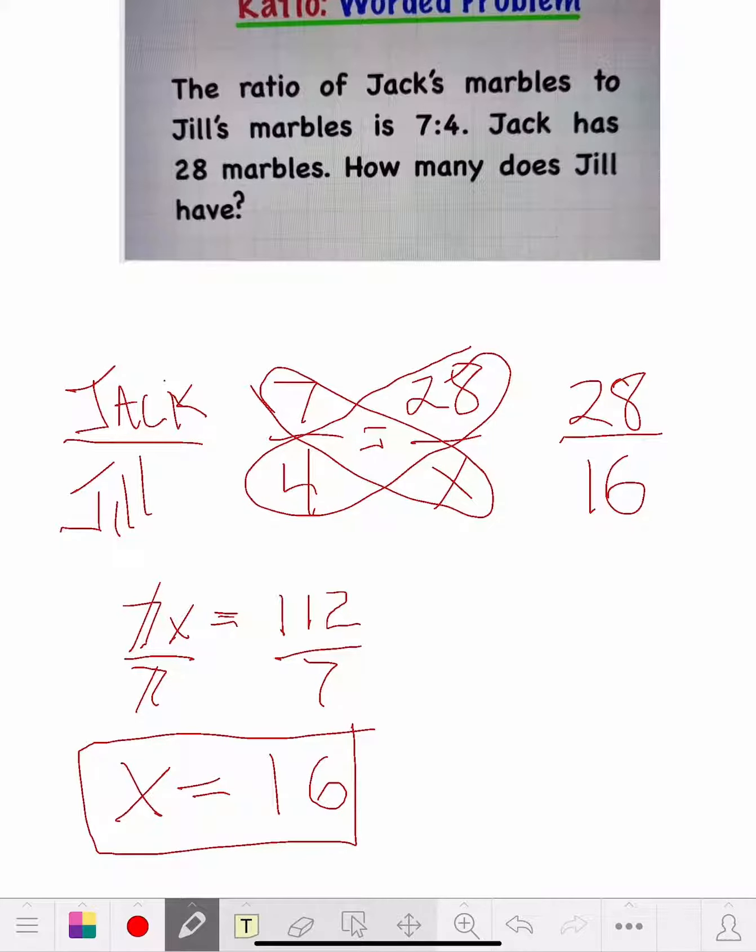Way to check that. If you did four times each one of these, four times seven is 28, four times four is 16. So there's my check. We know this is true, and that's all there is to it.